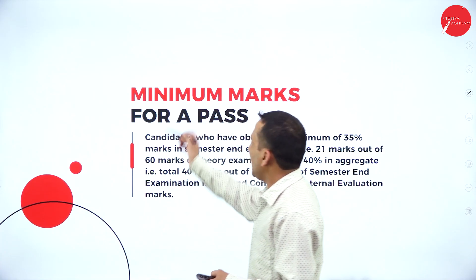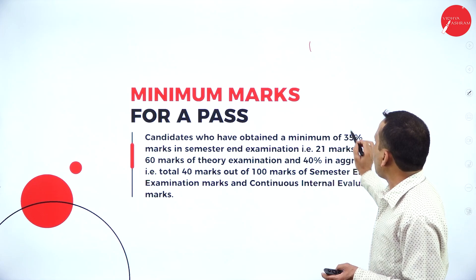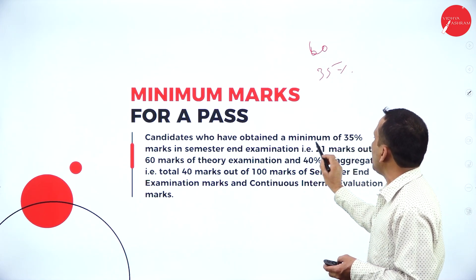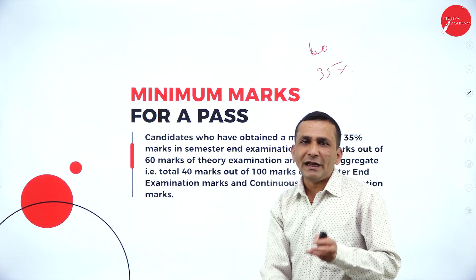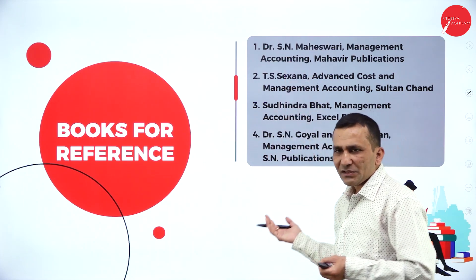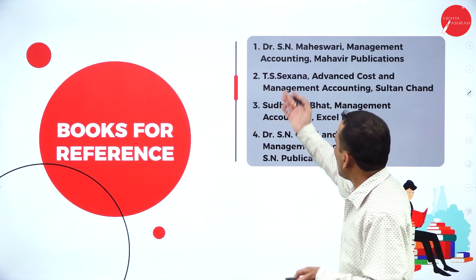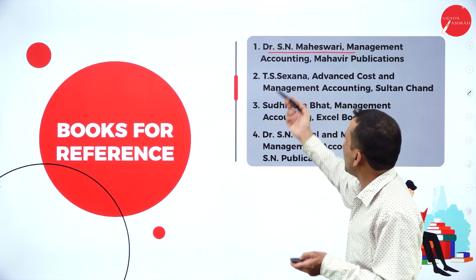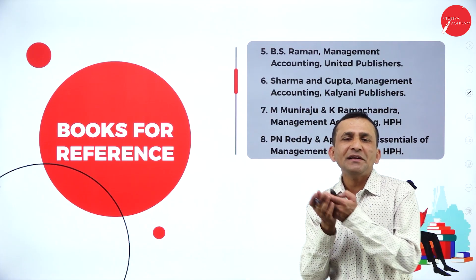For the minimum passing marks, you need 35% out of 60, which is 20 marks. Aggregated with the internal, you need 40% overall. For textbooks, you can refer to Dr. Maheshwari or any other textbook. Notes will also be provided. You can take a screenshot if needed. Keep watching for the next session.